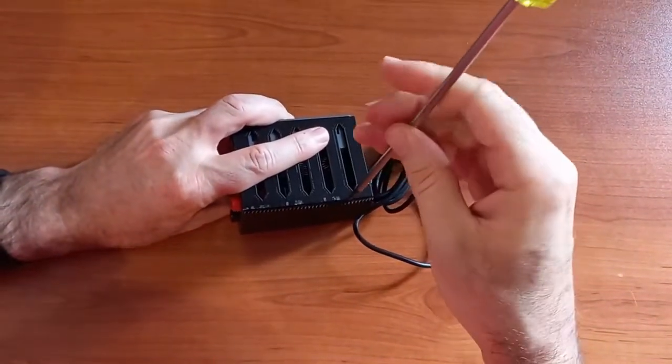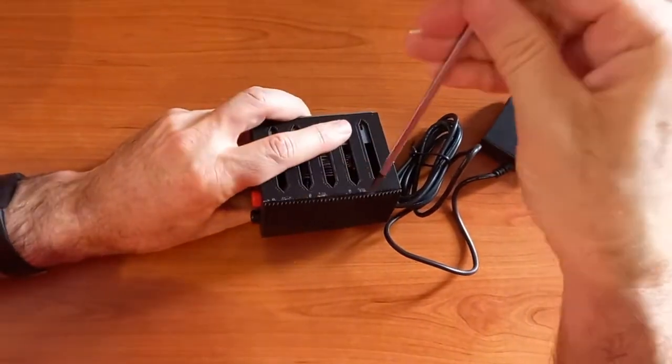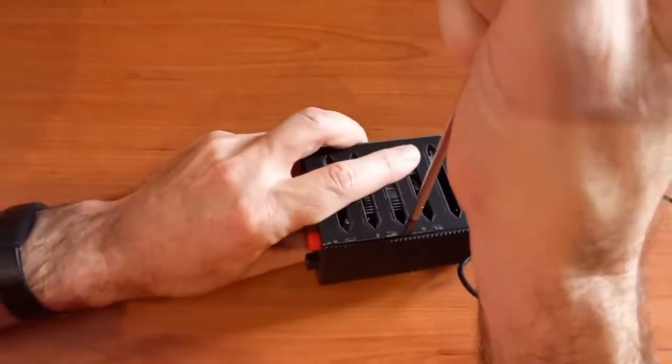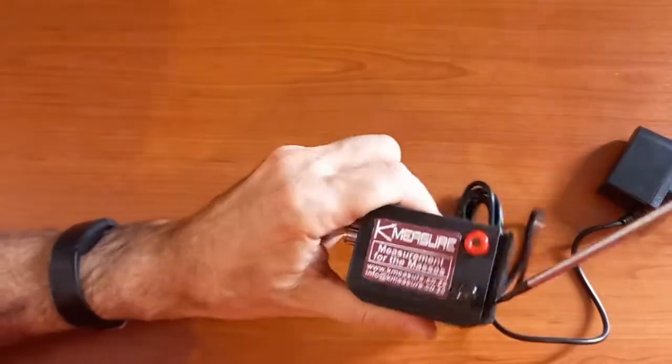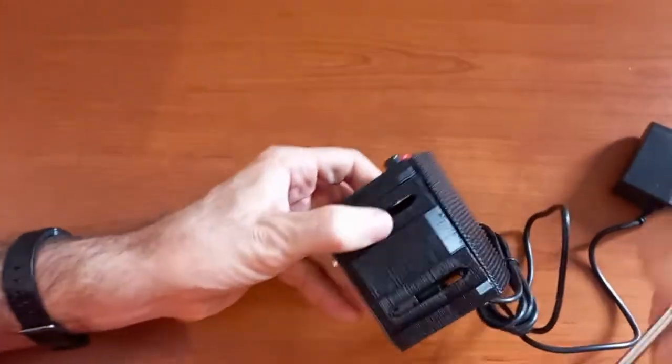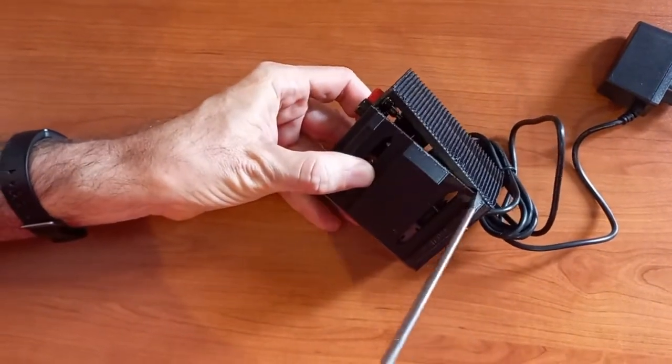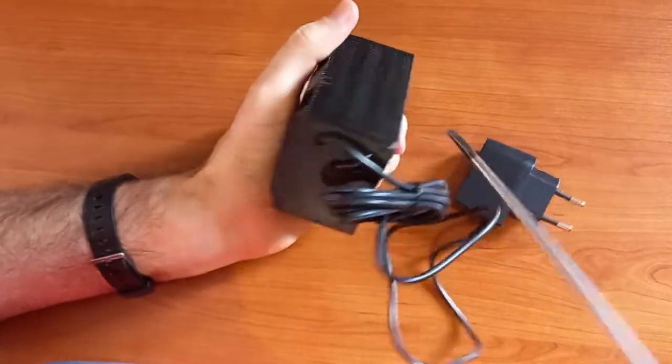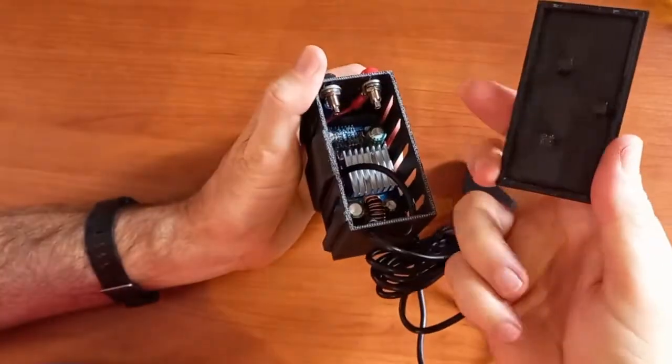You start by carefully removing the back with a screwdriver about that size and you just gently insert it there and twist it all around the sides. Don't force anything too hard, but if you slowly take it all around like that, then the back comes off.